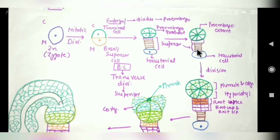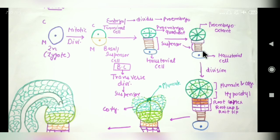The suspensor of that cell connects to the pro-embryo octant with the hypophysis. We can see that the pro-embryo octant undergoes further divisions forming a larger cluster of cells.